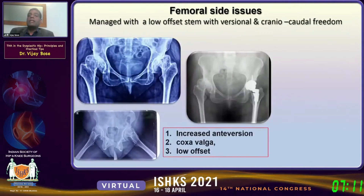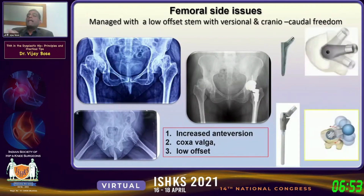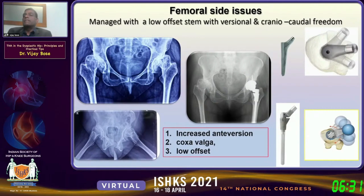Before going on to the acetabular side, I'll finish the femoral side. The femoral side issues are three: increased anteversion, coxa valga, and low offset. These three principles must be appreciated, otherwise you'll run into trouble. To address them, you need a stem with modularity — not only version modularity but also cranio-caudal modularity, which many junior surgeons fail to understand. The cone Wagner and a similar stem like the S-ROM perform very well.